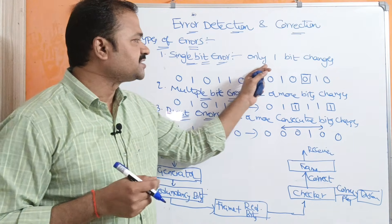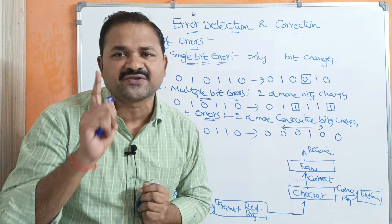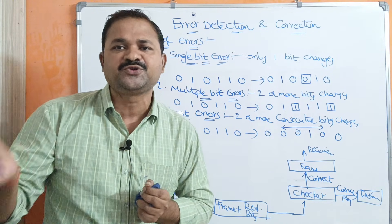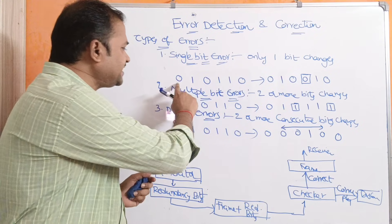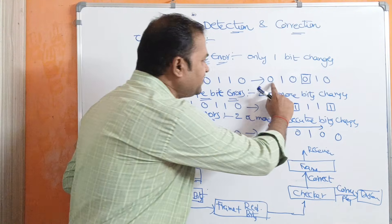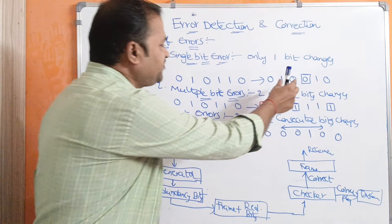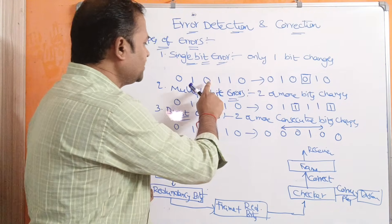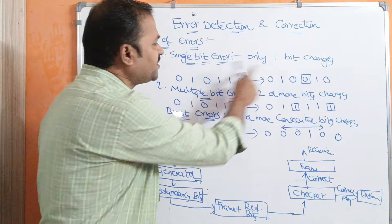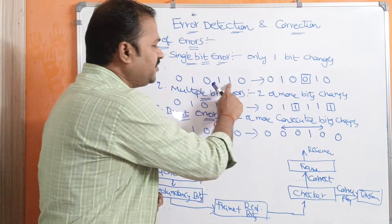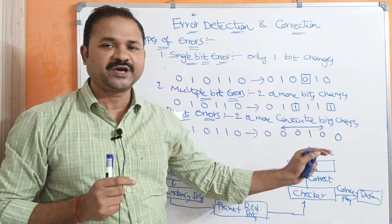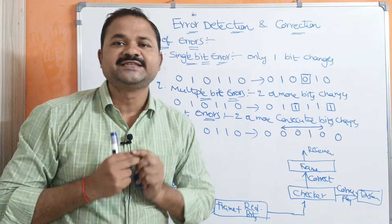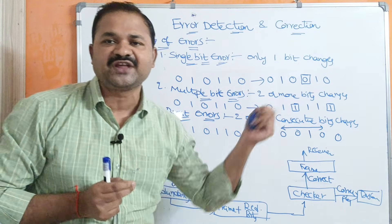Single bit error means only one bit changes during the transmission from sender to receiver. So let the sender send this message whereas the receiver receives this message. If we observe the receiver message, the first three bits are same, whereas the fourth bit is changing from one to zero, and the last two bits are same. So only one bit changes — this is called a single bit error, and here the frame is corrupted.